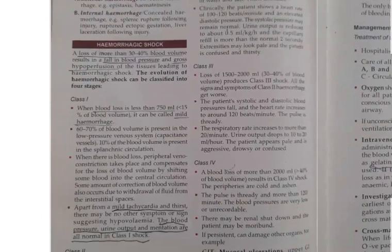Class 1 is blood loss less than 750 ml, or less than 15% of blood volume. If less than 15% of blood volume is lost, we classify it as Class 1 hemorrhagic shock. It can also be called mild hemorrhage.